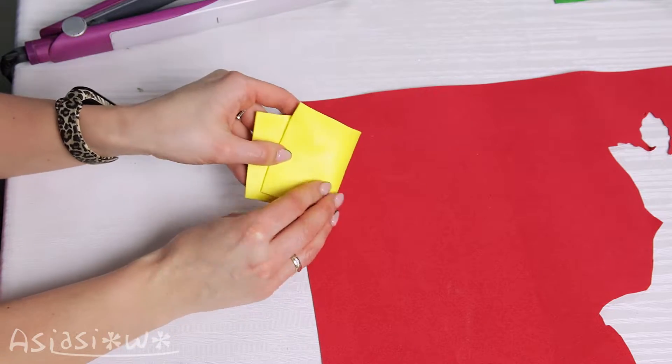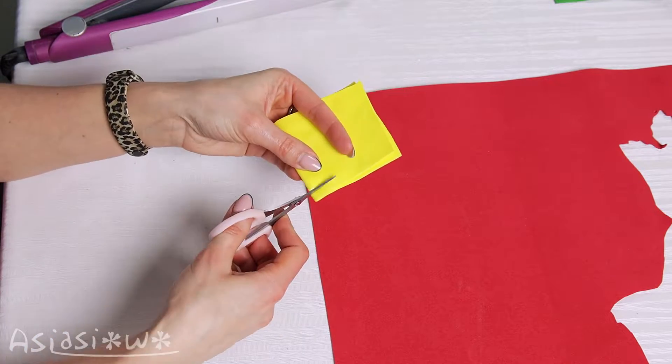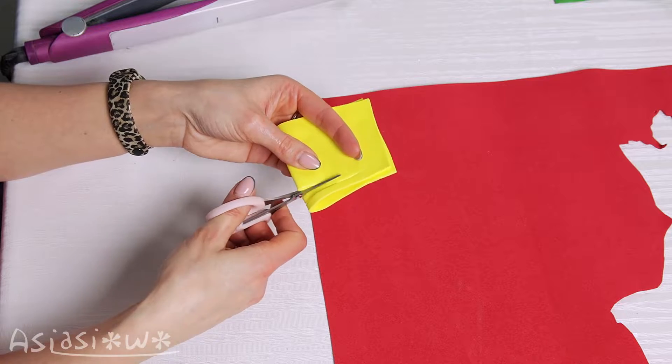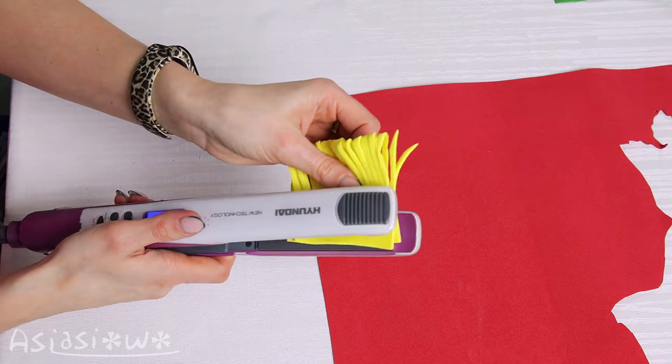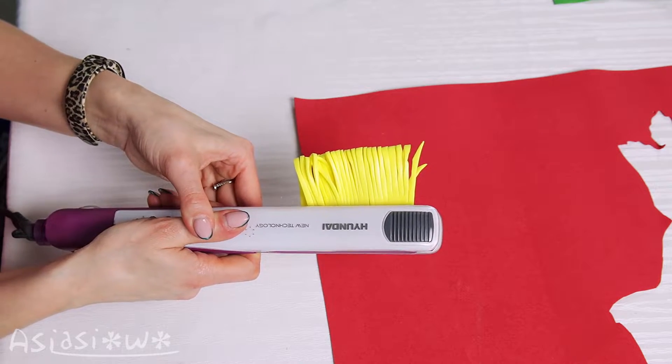Fold it in half and do the incisions. Warm it up and form it again.